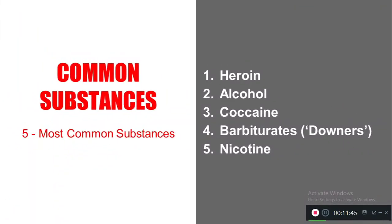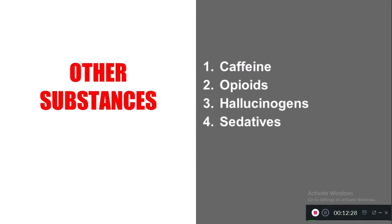Now let's see the common substances causing abuse or dependence. Listed in descending order of severity: first, heroin, which has the highest rate of causing substance abuse; followed by alcohol, then cocaine, then barbiturates — which calm down the central nervous system and are called downers — and nicotine. Other substances causing abuse include caffeine, opioids, hallucinogens, and sedatives. Keep in mind these nine substances which cause abuse.